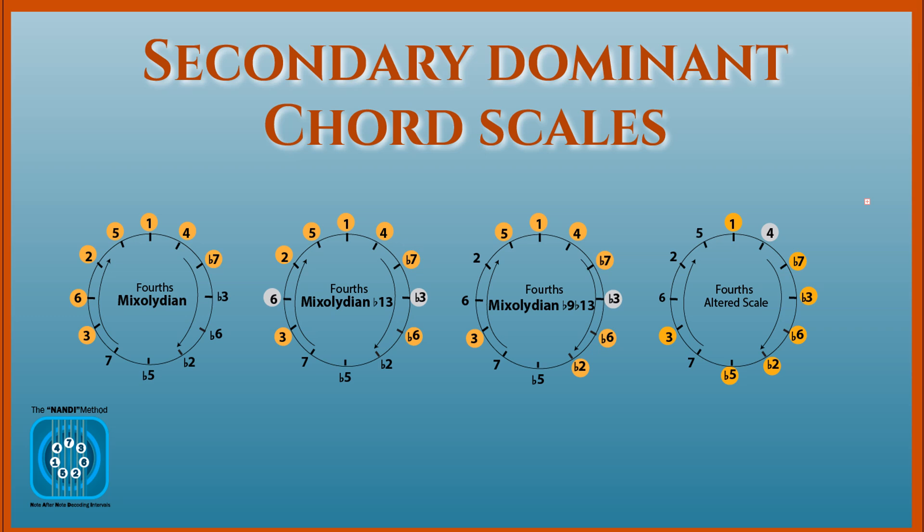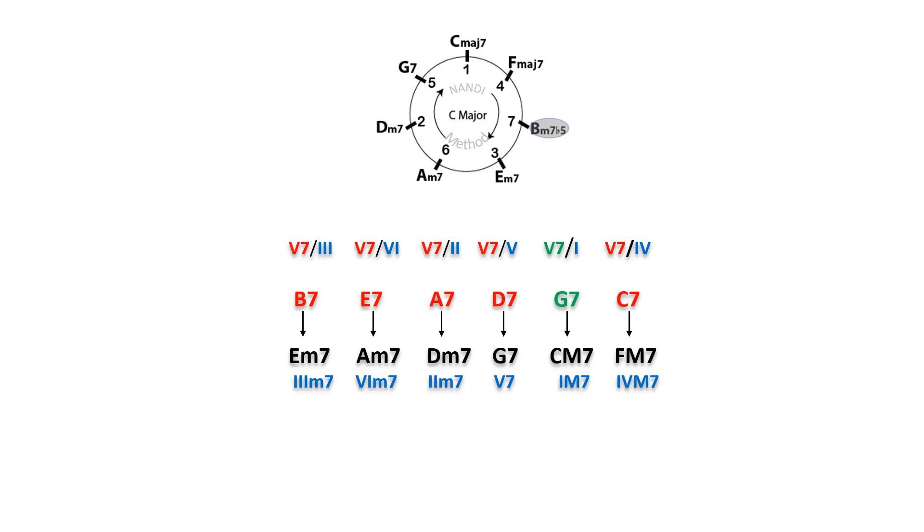In this lesson, you'll learn how to identify the chord scales for secondary dominance in the key of C major. In the C major scale, G7 is the primary dominant, built on the fifth degree. Secondary dominants are non-diatonic chords built a fifth above the roots of the other chords, except for B minor 7 flat 5, which does not have a natural fifth.